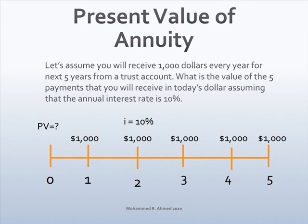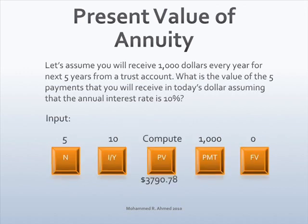Assume you will receive $1,000 every year for the next five years from a trust account. What is the value of five payments in today's dollars, assuming the annual interest rate is 10%? Draw the timeline: time period is five years, $1,000 every year is the payment, interest rate is 10%, question mark on the left-hand side — it is a present value of annuity analysis. Enter: 5 N, 10 I/Y, $1,000 payment, zero future value. Press compute and PV for Texas Instruments, or just PV for HP. The present value of $1,000 deposits for five years is $3,790.78.